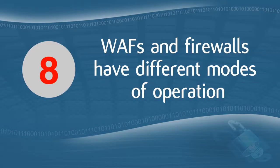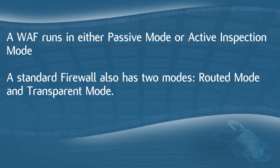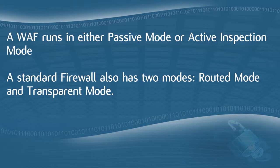The eighth difference is that WAFs and firewalls have different modes of operation. A WAF can operate in two modes: passive mode and active inspection. Passive mode means the WAF operates without action, effectively leaving the application unsecured — this should only be used for testing. In active inspection mode, a WAF continuously scans and protects against threats at the application level. A standard firewall also has two modes: routed mode and transparent mode. Routed mode operates on layer 3, executing static and routing protocols, acting like a network router. Transparent mode works on layer 2, allowing only transparent forwarding of data through bridging of interfaces, completely bypassing layer 3.